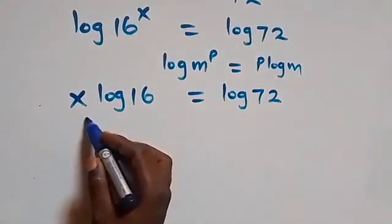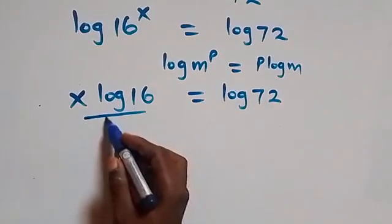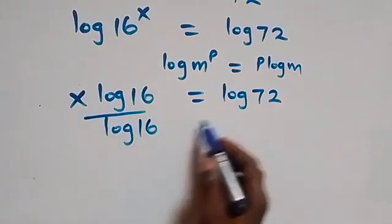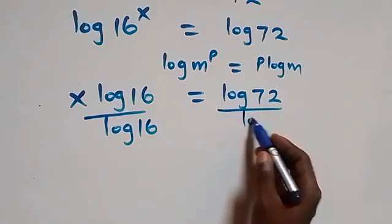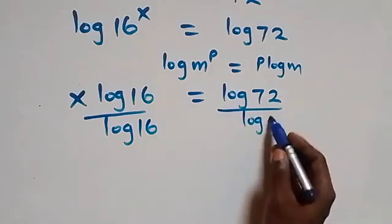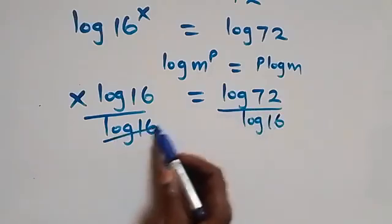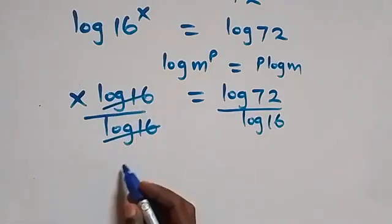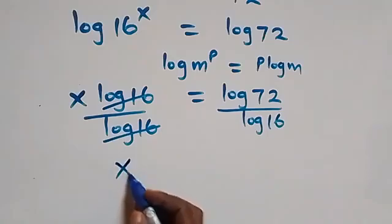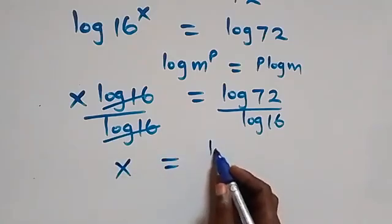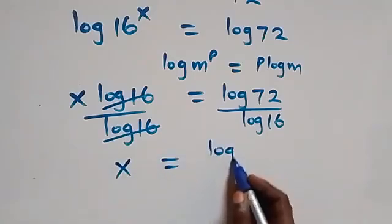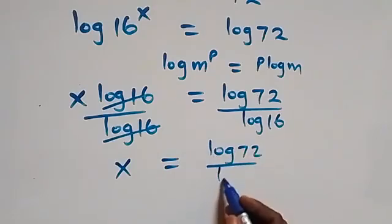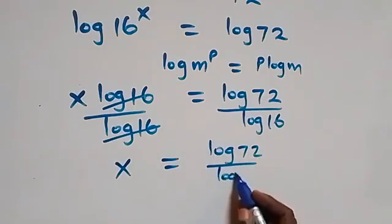From here, we divide both sides by log 16. So we divide by log 16 on both sides — log 16 cancels — and we are left with x equals log 72 over log 16.